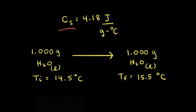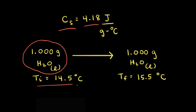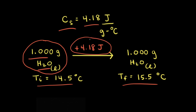Let's look at specific heat. The specific heat of water is equal to 4.18 joules per gram degrees Celsius. This means that if we have 1 gram of liquid water at an initial temperature of 14.5 degrees Celsius, it takes positive 4.18 joules of energy to increase its temperature by 1 degree Celsius, giving a final temperature of 15.5 degrees Celsius.